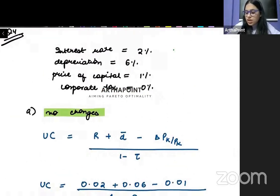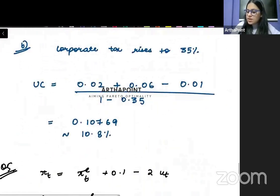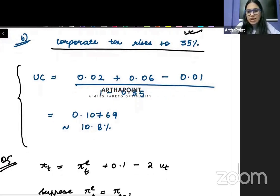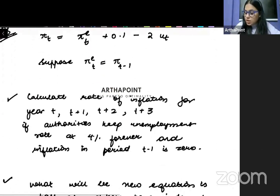Next kind of question - I've already told you that all back questions of Jones chapter 17 investment, all numerical questions are important. And I've provided an assignment with all those relevant questions to all the enrolled students. So I'm just giving you an example here. They will give you something like this: the interest rate is 2%, depreciation is 6%, price of capital is 1%, corporate tax is 0%. Then they will ask you to calculate the user cost of capital. And then they'll say okay now the corporate tax rises to 35%, recalculate the user cost of capital. So again very important from exam point of view. I'm doing it very quickly because I know you have an exam tomorrow. I don't want to waste time.